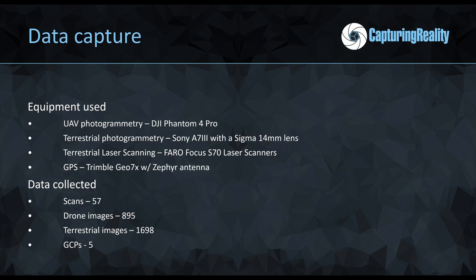Now let's talk about the data capture. The dataset was provided by Global Digital Heritage — thank you to them. They used a DJI Phantom 4 Pro for drone images, a Sony A7 Mark III with Sigma 14mm lens for ground images, two Faro Focus scanners for laser scanning, and a Trimble GEO 7X GNSS receiver for surveying the ground control points used for geo-referencing. In total they acquired 57 laser scans, 895 drone images, and 1,698 terrestrial images, along with five ground control points.